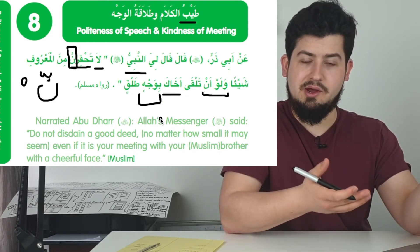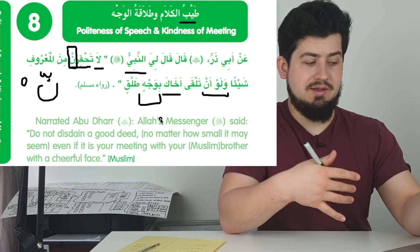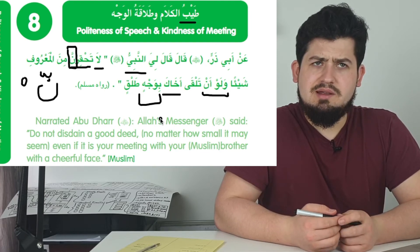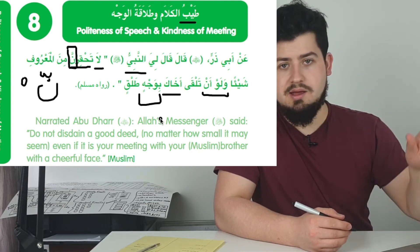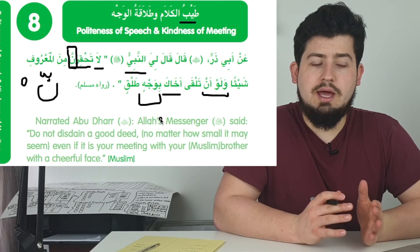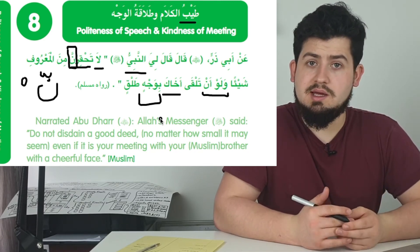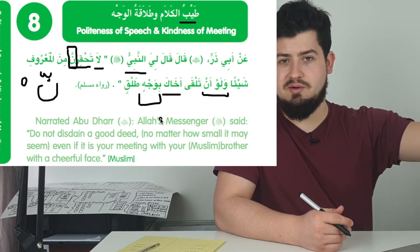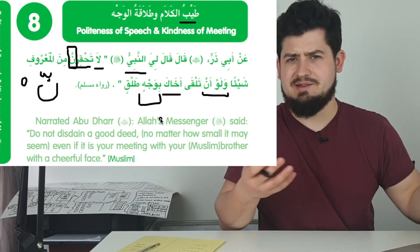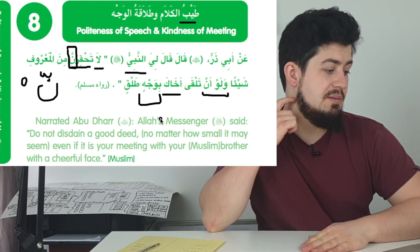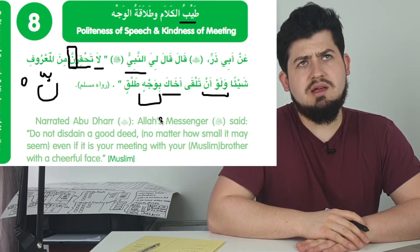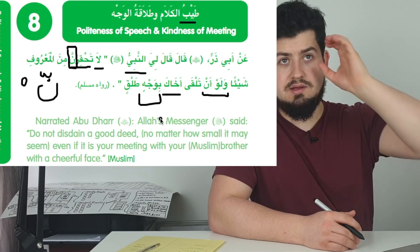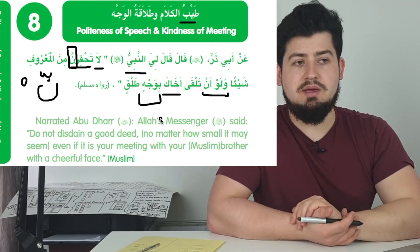Does this mean it doesn't apply for sisters? Of course not — if it's for girls, of course it's the same. There's no reason why it wouldn't be rewarded for girls to meet each other with a cheerful face. It's addressing men because the Prophet is speaking to Abu Dharr, a man. There are a lot of different words that come from the root ط-ل-ق — for example, طَلَاق means divorce, which is the name of a Surah of the Quran, and it relates to the idea of separating or putting something away. The verb طَلُقَ means to be cheerful or to be happy about something.